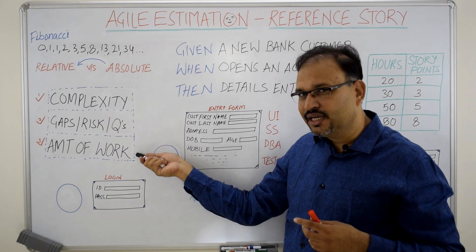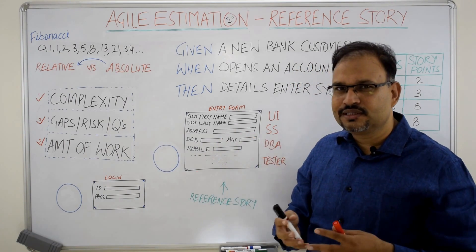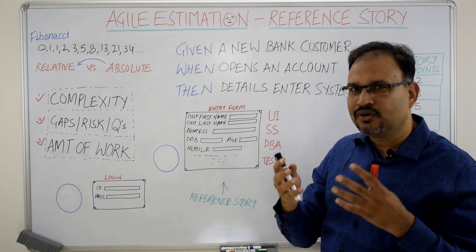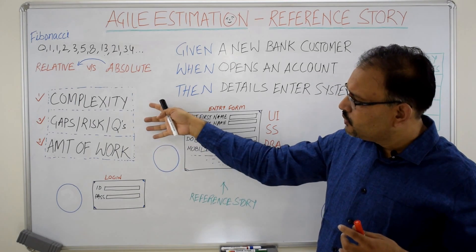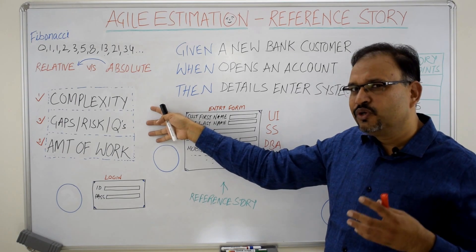Amount of work or size, number of text boxes, dropdowns, check boxes, calls to APIs is going to decide its size. Put together, decides the story point of the story.